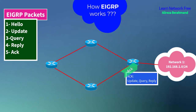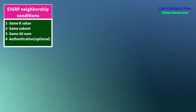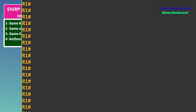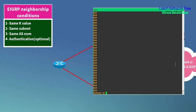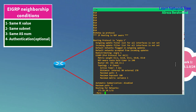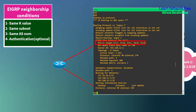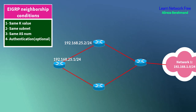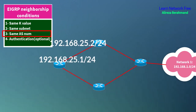The last thing you should know about EIGRP is neighborship conditions. To build a neighborship in EIGRP, we have to consider five conditions. Number one: the same K-value for metric — you can view the K-values with the command 'show ip protocol'. Number two: you need to set the same subnet mask for each interface between two connected routers. Number three: setting the same AS number if you want to configure EIGRP through classic mode.